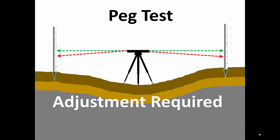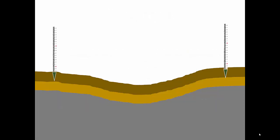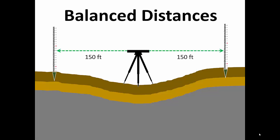To begin a PEG test, we mark two stable points 200 to 300 feet apart and set up the instrument at the midpoint between them. In this configuration, we say that the backside and foresight distances are balanced or equal. First, carefully read both rods and record readings R1 and R2.